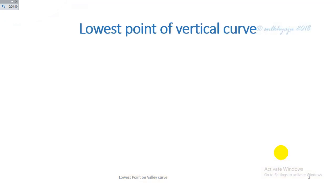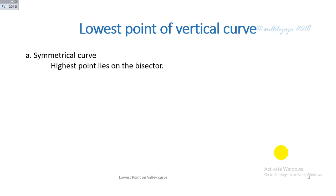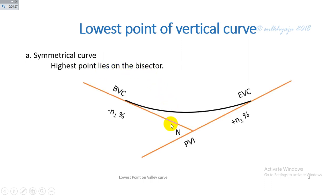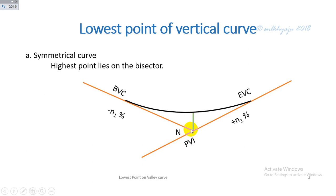The lowest point on a vertical curve depends on the type of valley curve. In a symmetrical valley curve, the lowest point lies on the angle bisector of the angle of intersection — that is, if the descending gradient N1 equals the ascending gradient, then this is a symmetrical valley curve, and the lowest point lies on the line of the angle bisector of the intersecting angle.